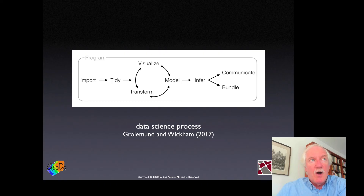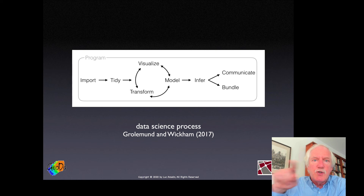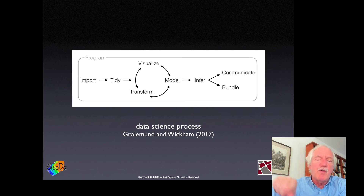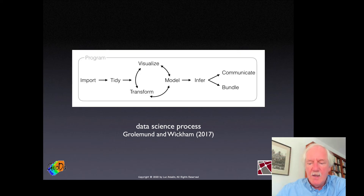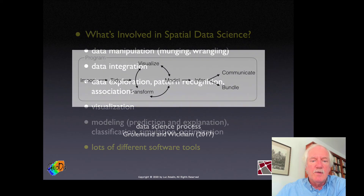The data science process — from a useful book in the R world — shows a flow chart where you start with raw data, clean it up, and then have a circular interaction between visualizing, transforming, and modeling until you get some insight, which you then communicate to the world.